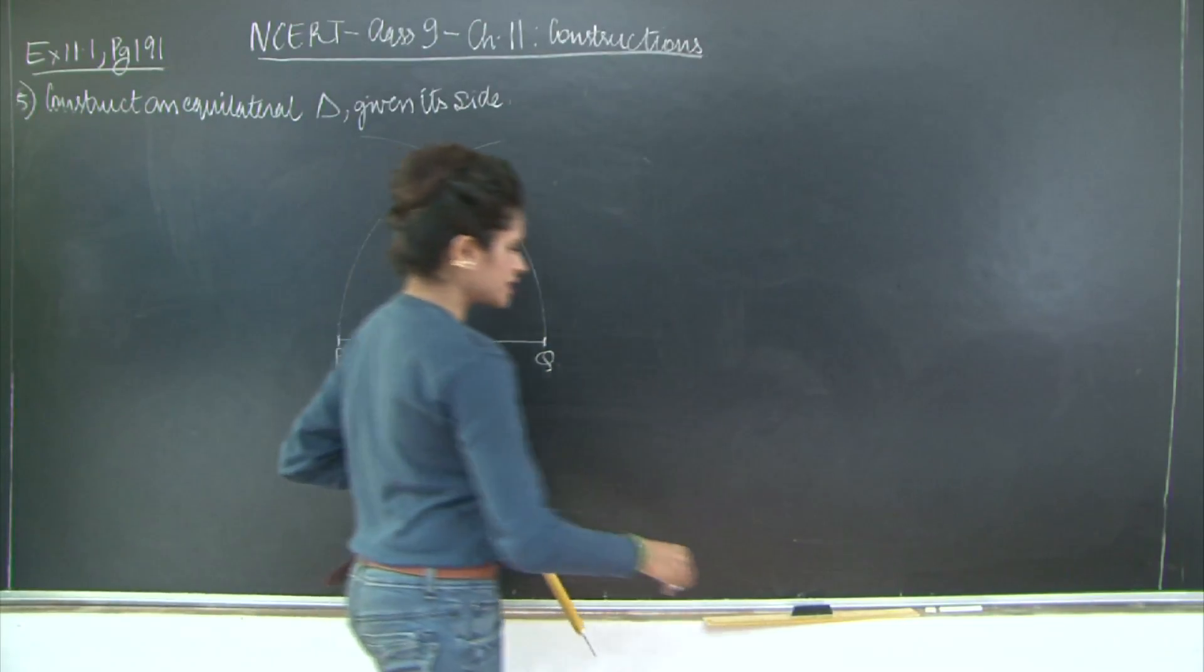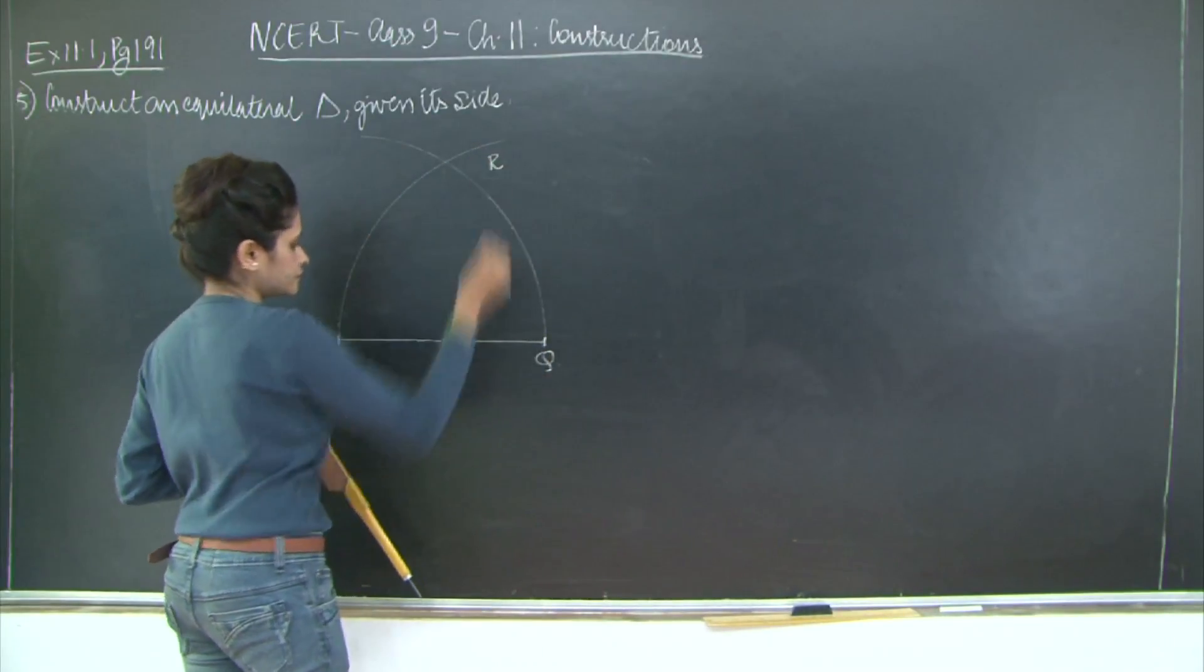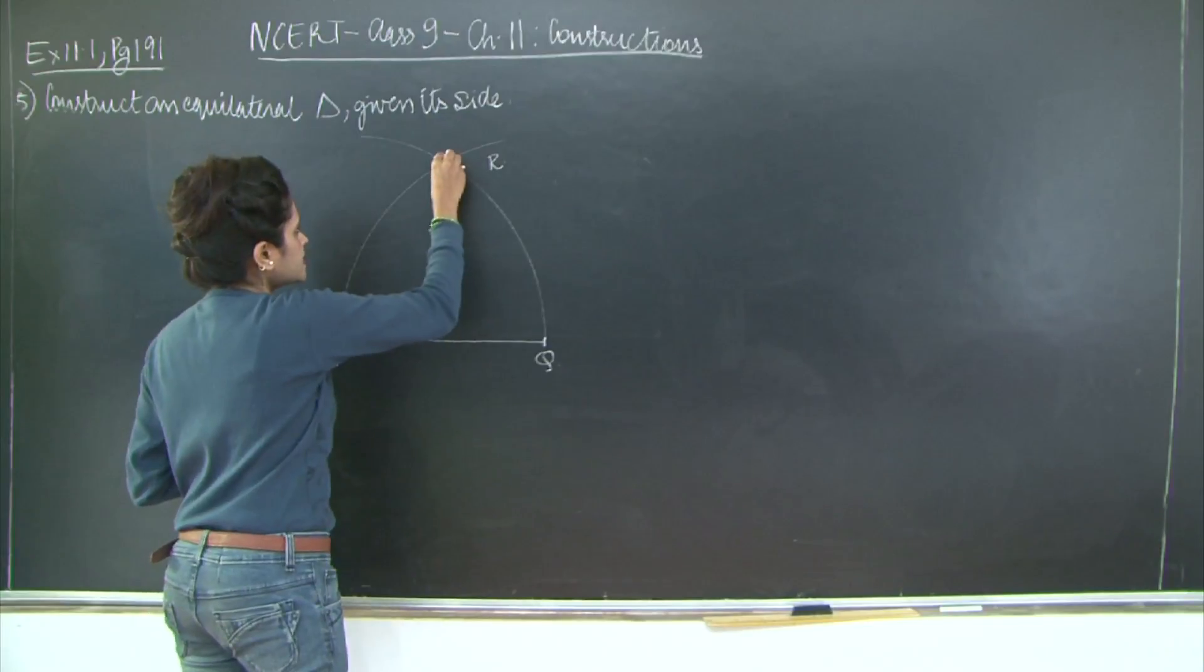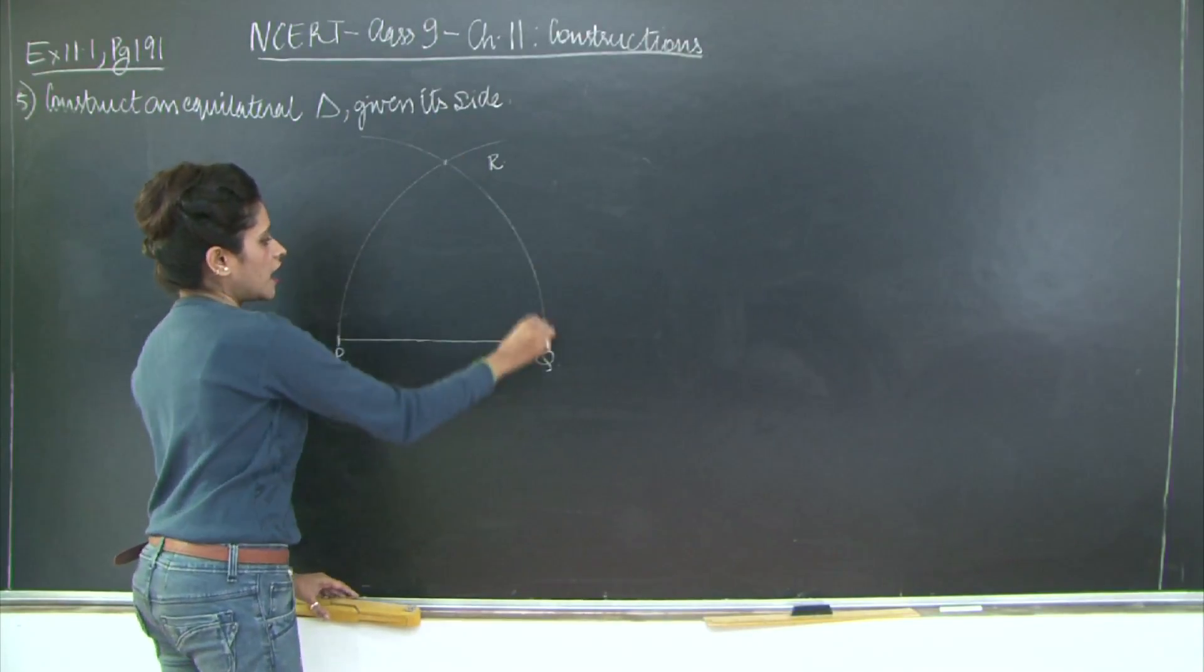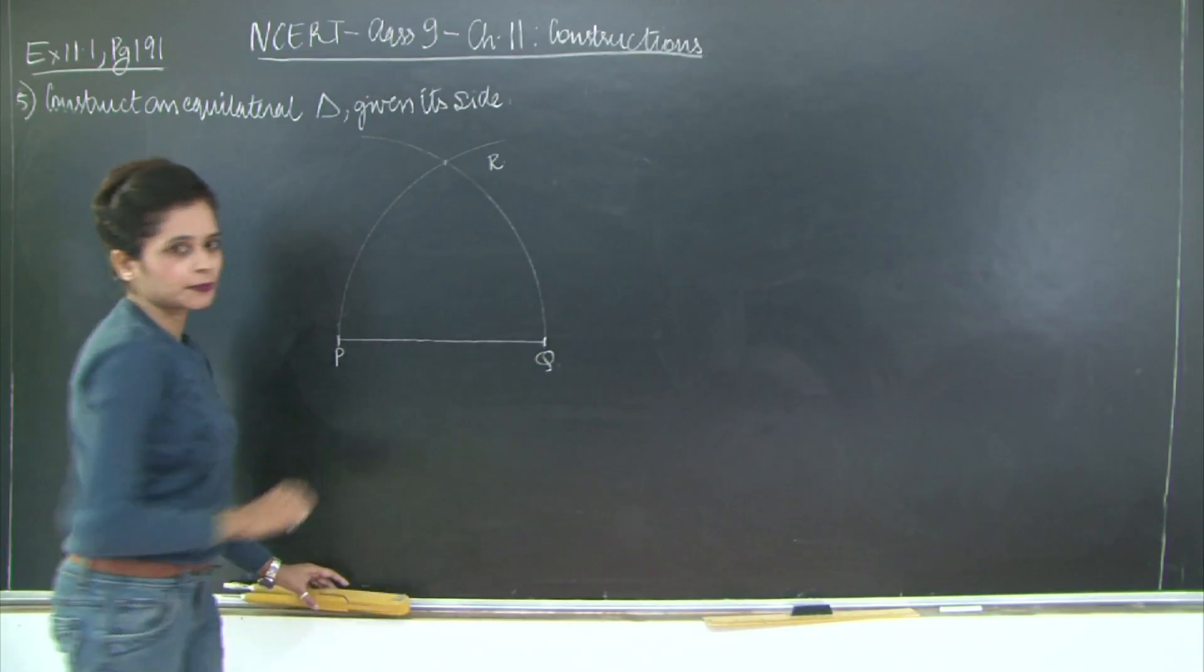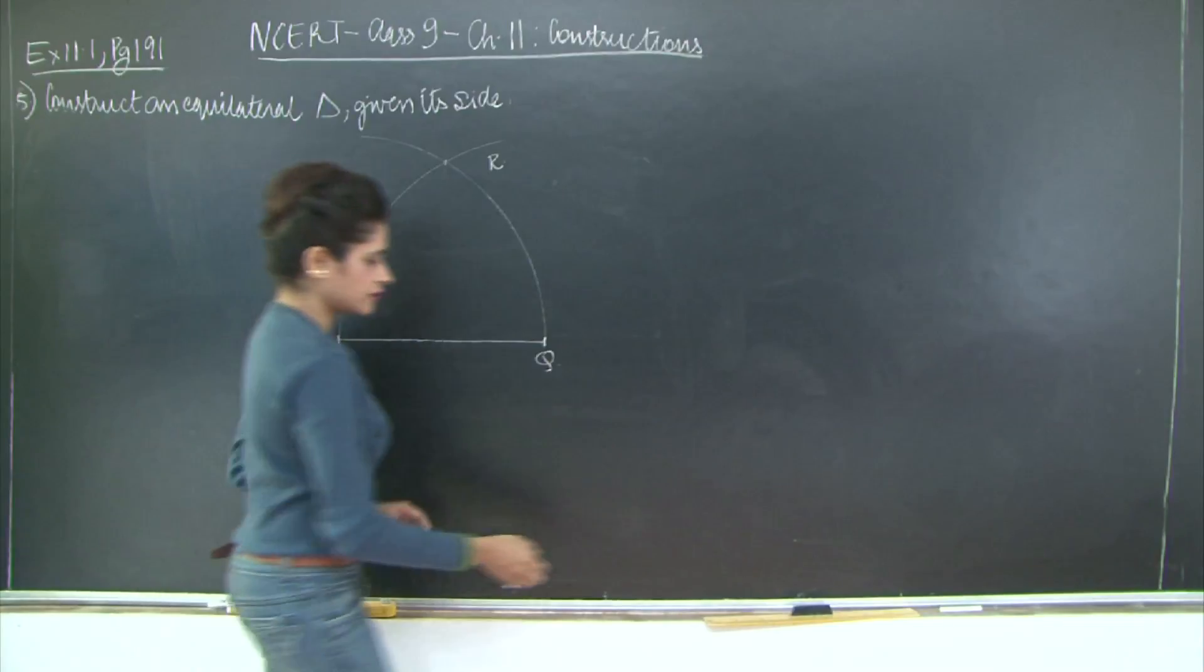I will mark this point of intersection of the arcs as R. Now you know that arc RQ is equal to arc RP because we have drawn them using the same length on the compass.